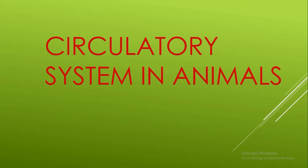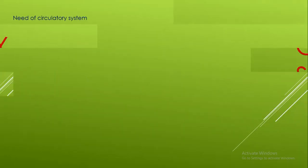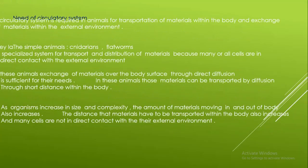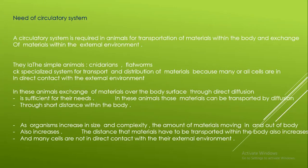The circulatory system in animals. A circulatory system is required in animals for transportation of materials within the body and exchange of materials with the external environment. Simple animals lack specialized systems for transport and distribution of materials because many of their cells are in direct contact with the external environment.